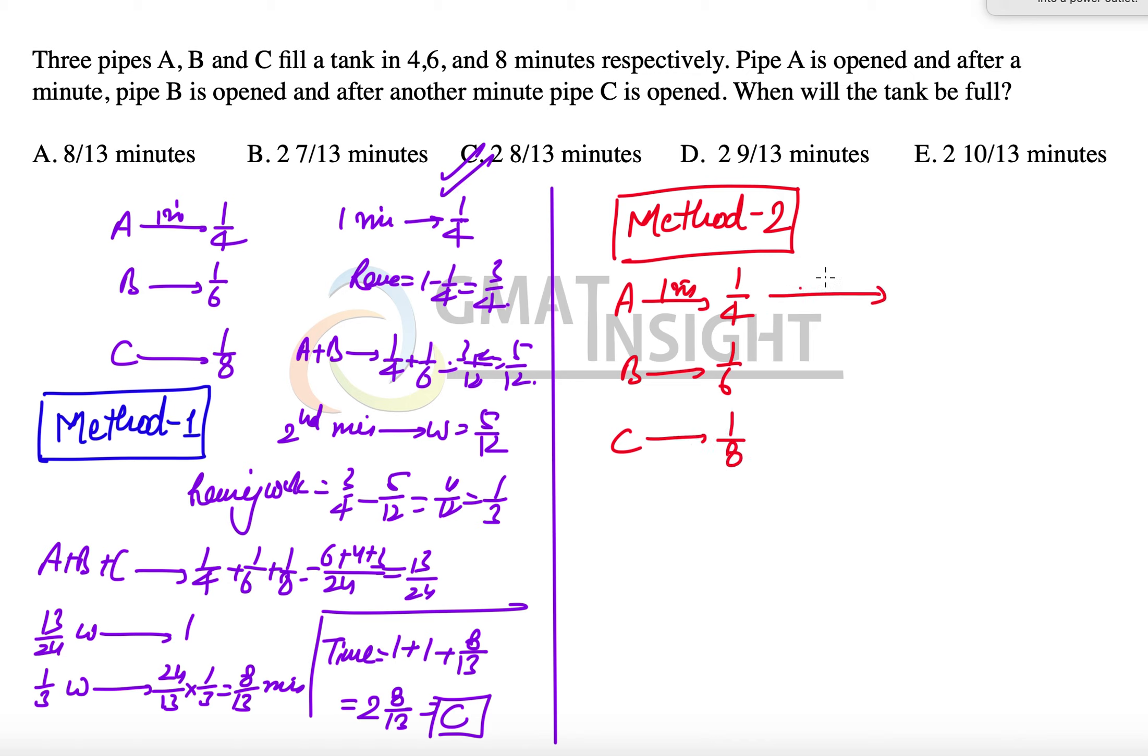But A works the maximum time. For example, let's assume that A works for T minutes. In that case, we can say that B worked for T minus 1 minute because B was opened 1 minute after A already started working. And C worked for T minus 2 minutes because C was opened even 1 minute after A and B had worked.